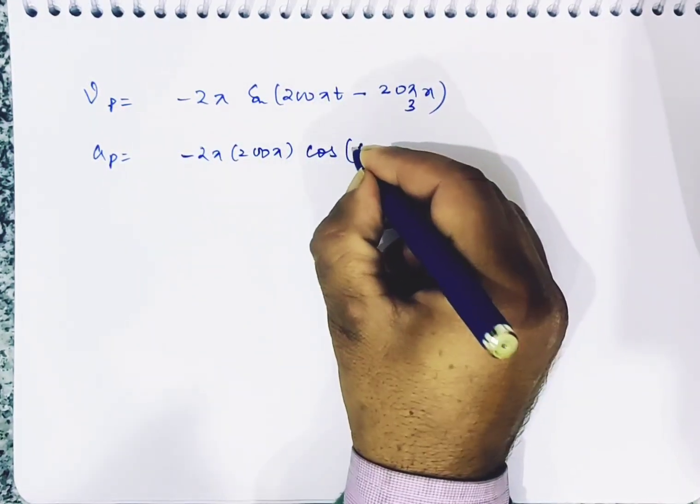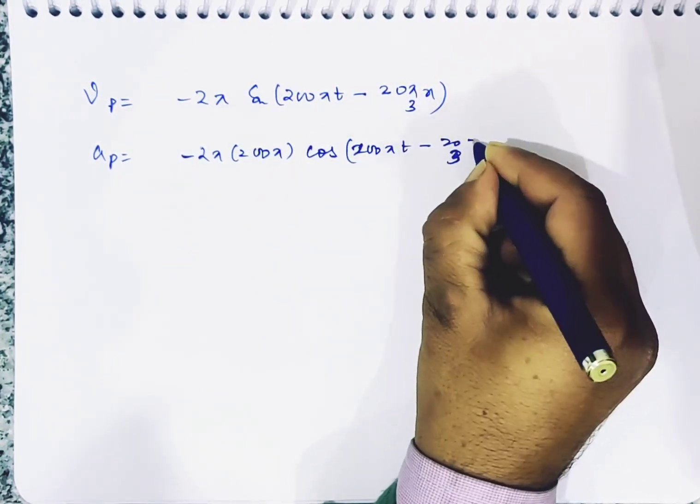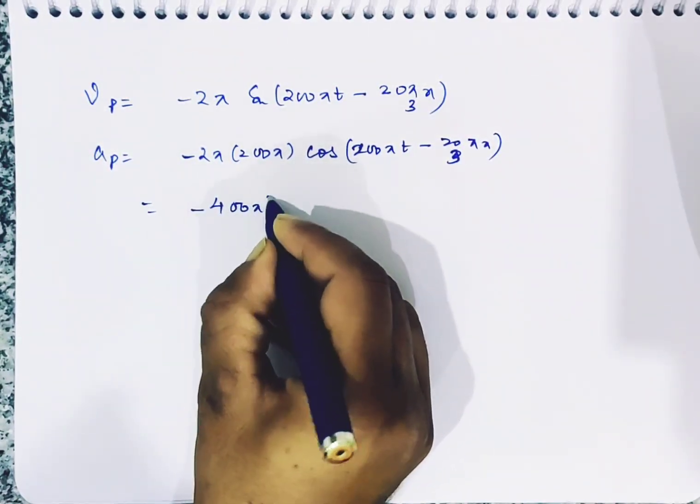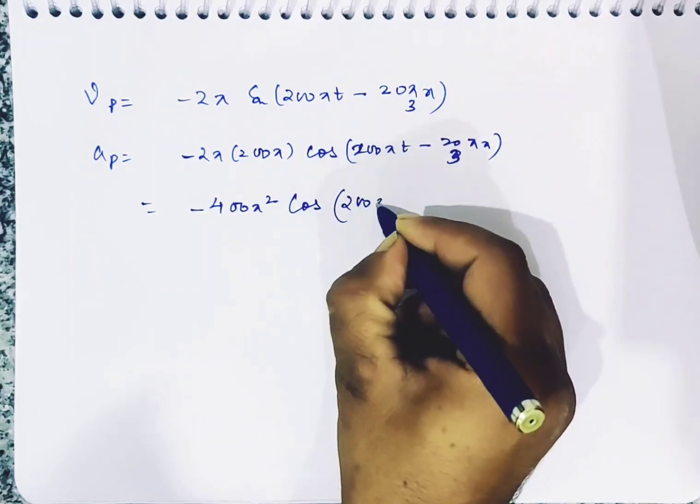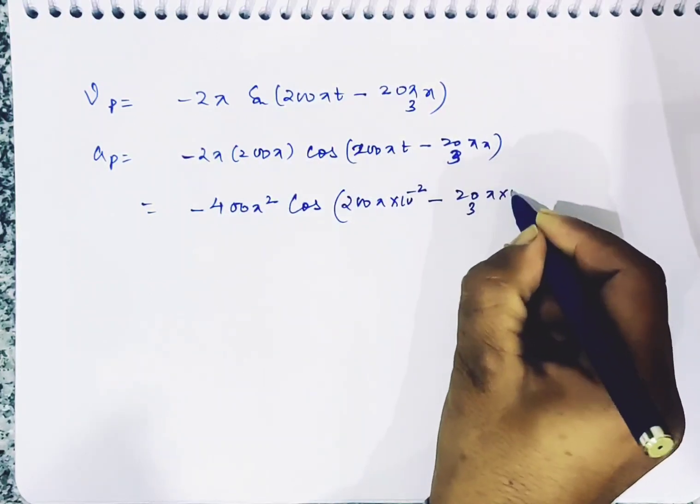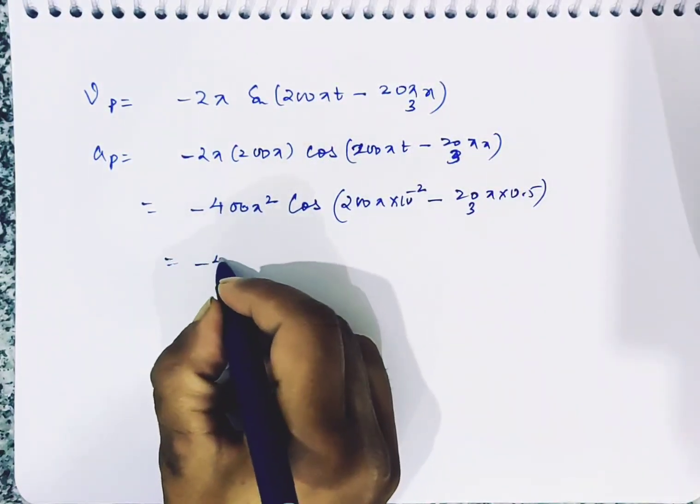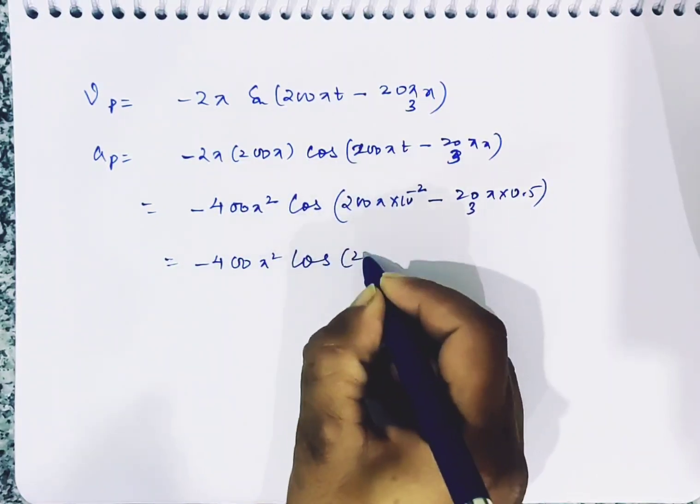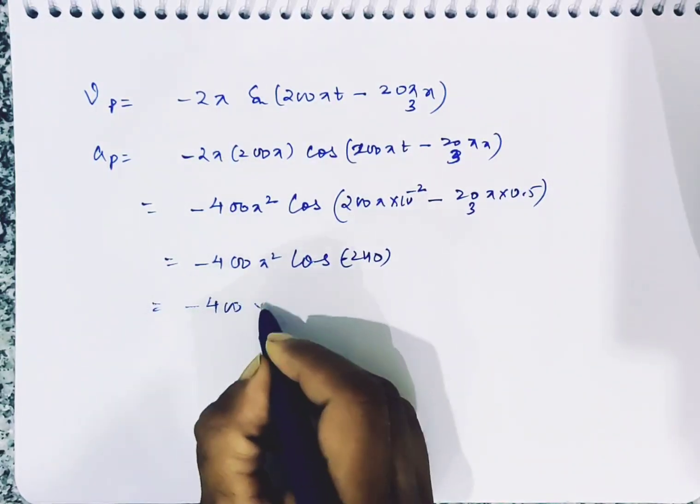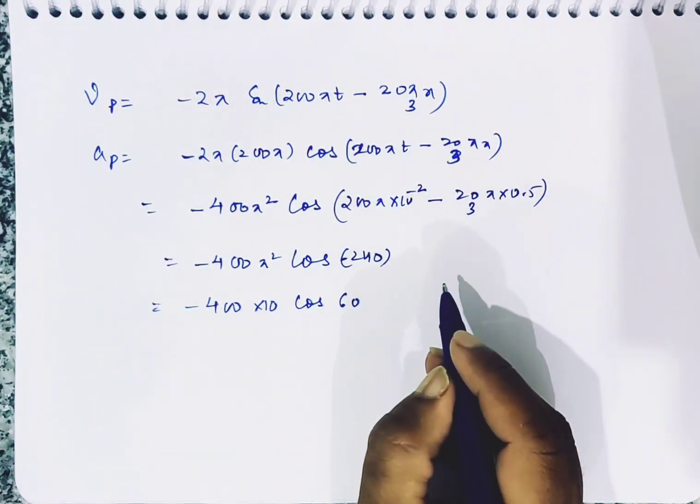So we get minus 400 pi square cos(200 pi into 10 power minus 2 minus 20 by 3 pi into 0.5). The argument is the same, so it's 240. Minus 400, take 10 out, and cos 60. This is 180 plus 60, cosine will be negative in third quadrant, so minus one half.